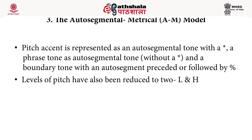The pitch accent tone is represented by putting an asterisk after it. The phrasal tone is without an asterisk, and the boundary tone is followed by a percentage mark. The levels of pitch have been reduced to two levels: low and high. As we discussed in the American structuralist model, Pike had introduced four levels of pitch, whereas in the AM model they reduced it to two. This is preferred because it gives a more constrained theory of levels and allows for a limited set of contrasts in phonological tone, as not all degrees of fall — such as steep fall, gradual fall, or normal fall — may be phonologically relevant, although they could be phonetically.